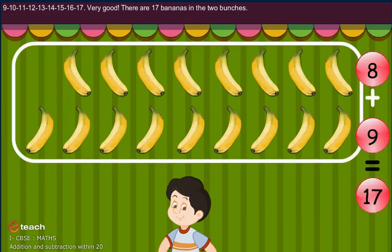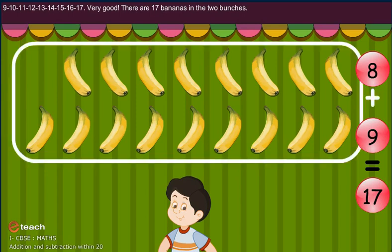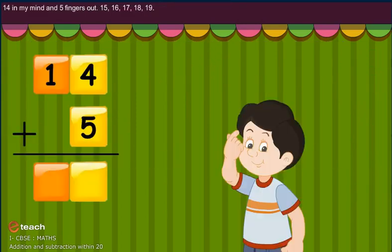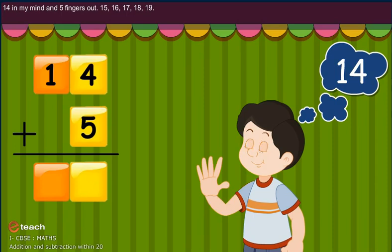There are 17 bananas in two bunches. 14 in my mind and 5 fingers out. After 14: 15, 16, 17, 18, 19.